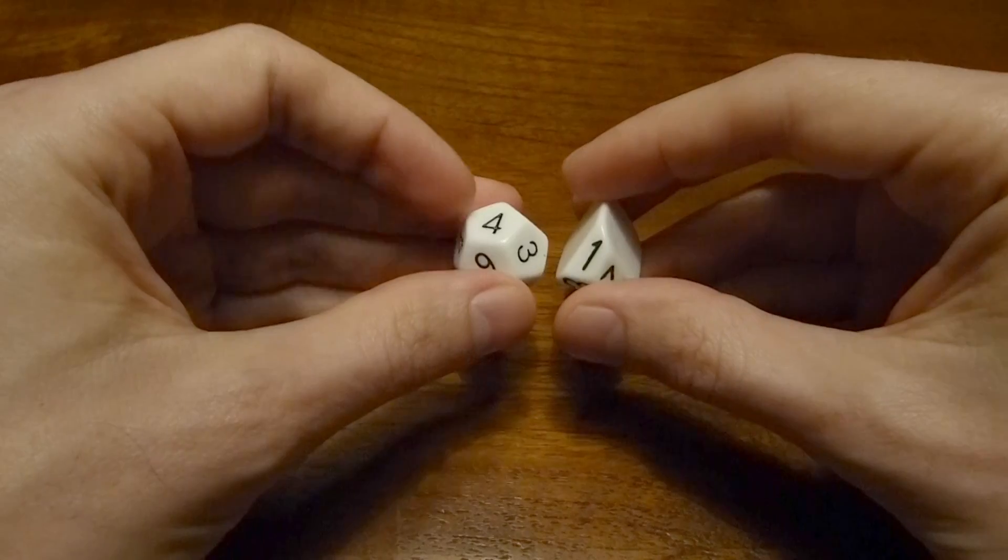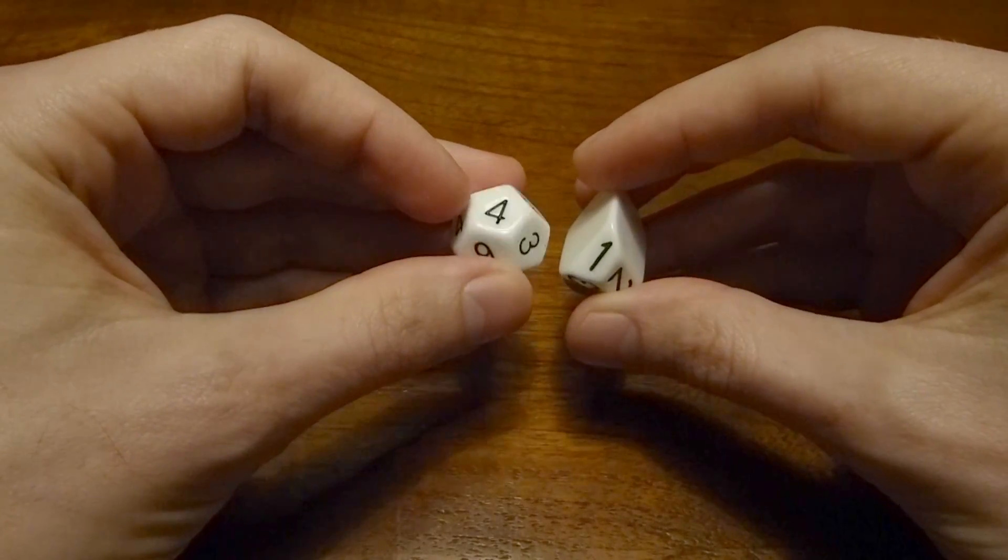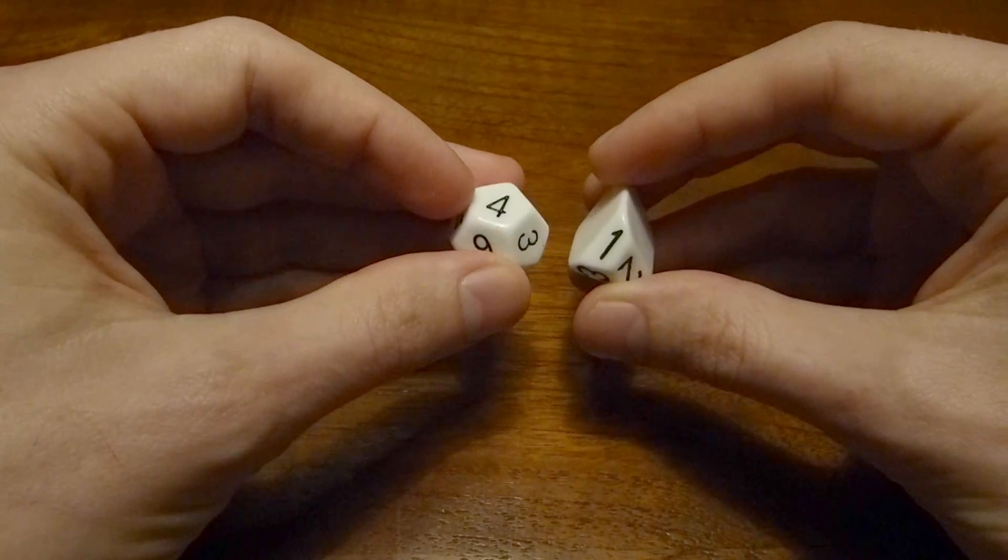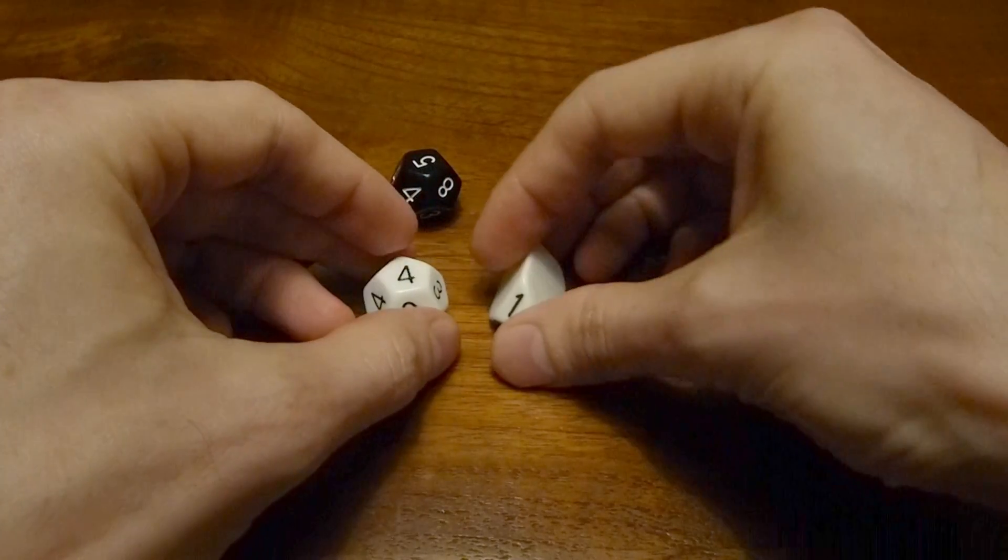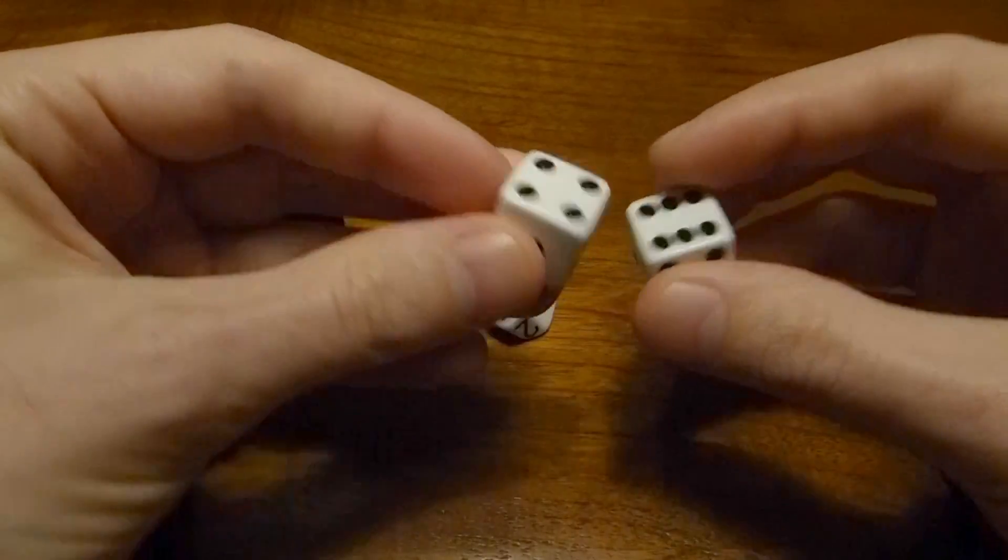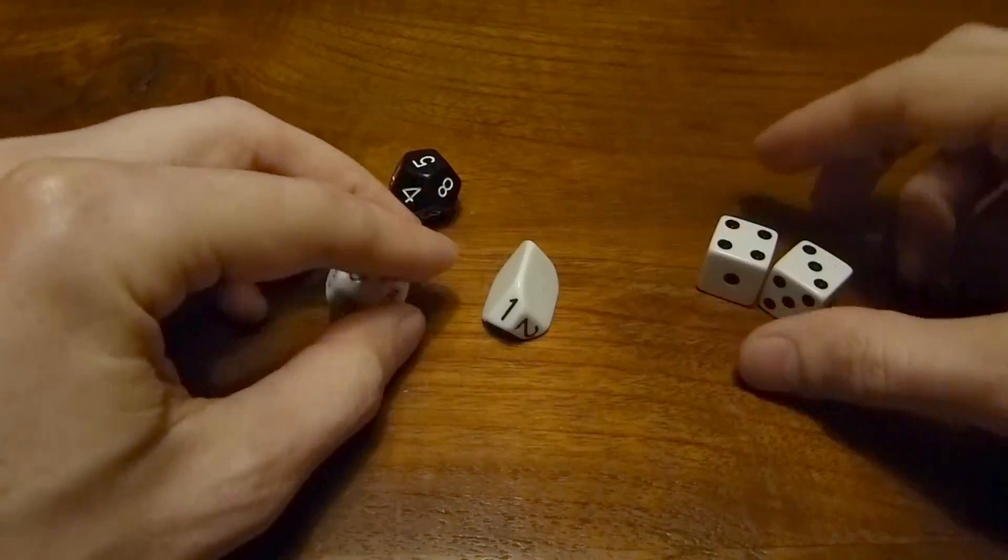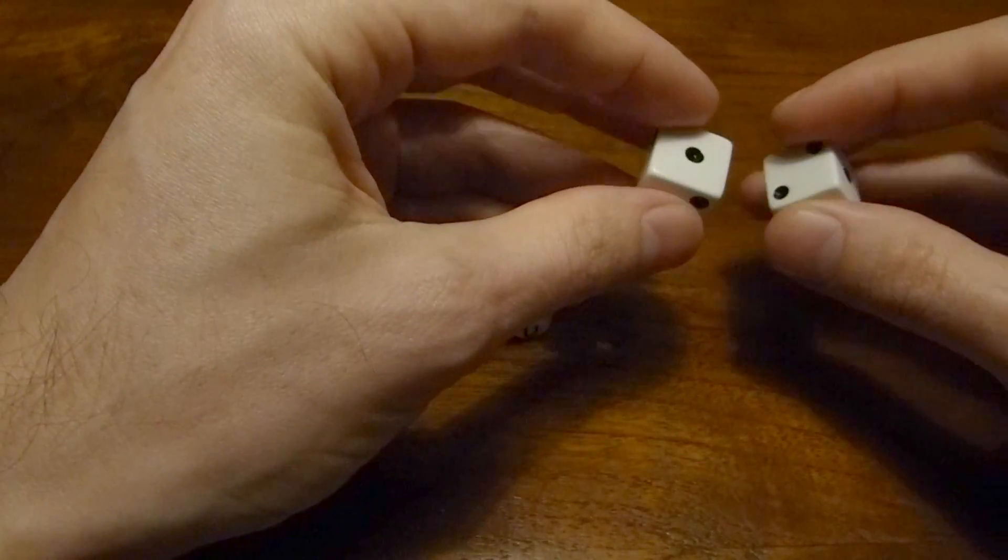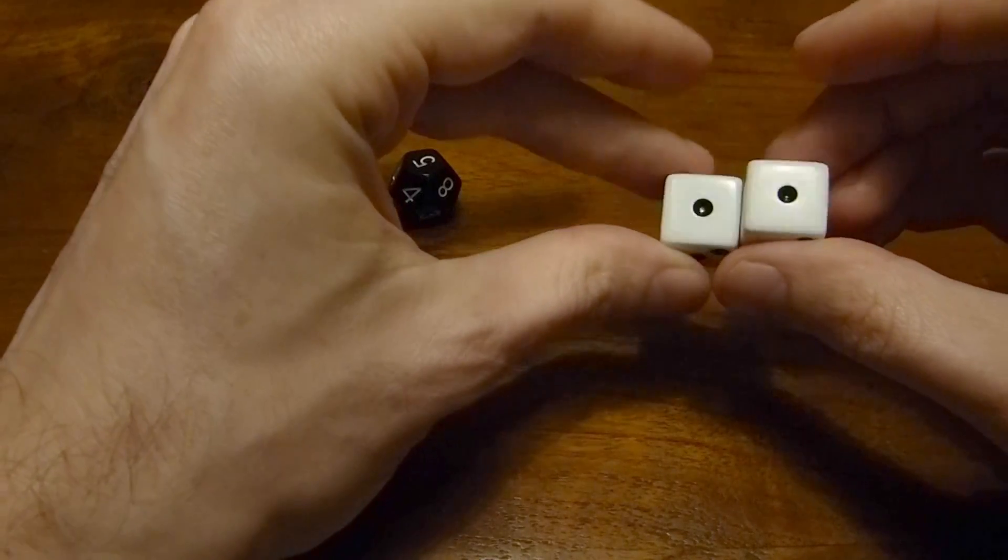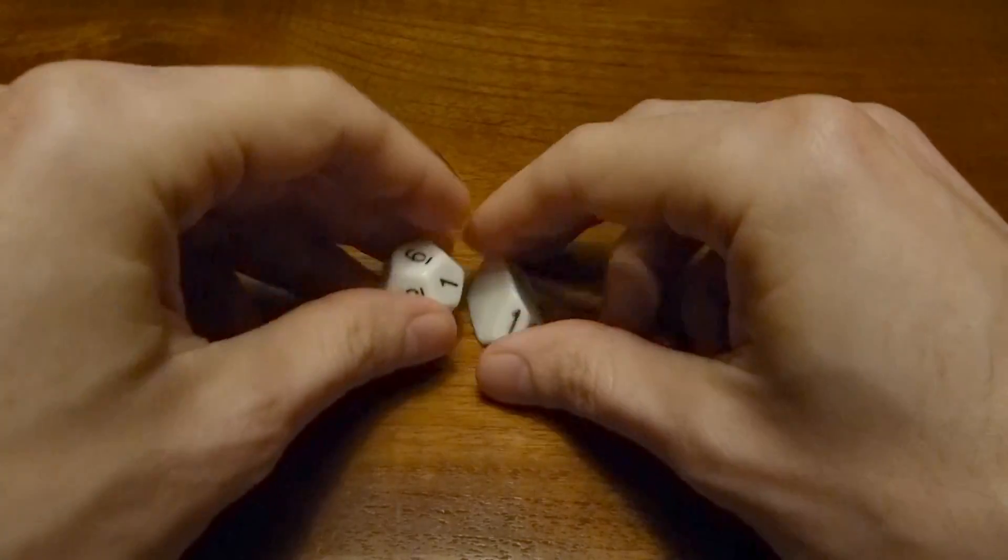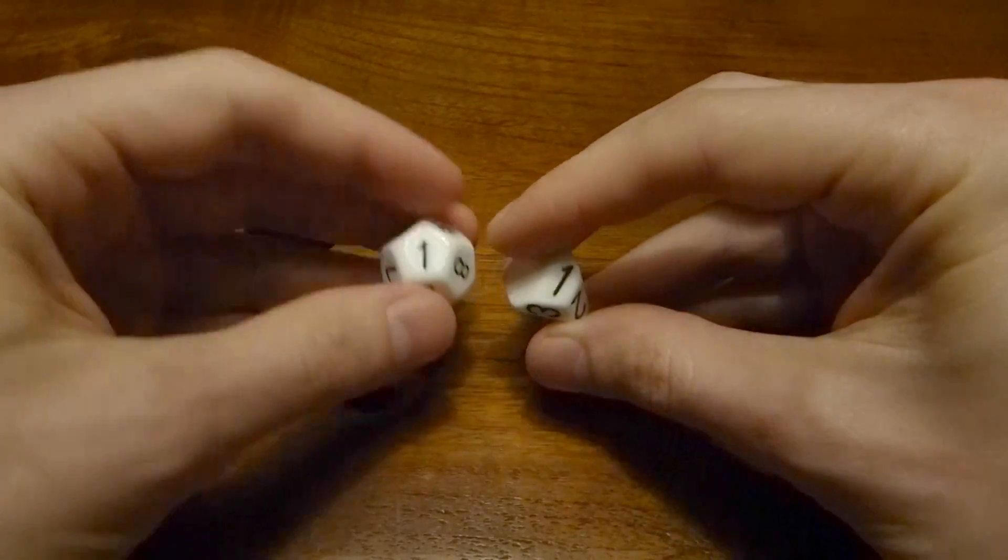So the point of this is the distribution of the sums that you get when you add them together is exactly the same as the distribution that you get from two ordinary cubical dice. For example, on two cubical dice, there's precisely one way to get 2 by adding 1 and 1, and it's the same here.